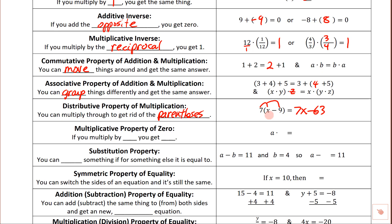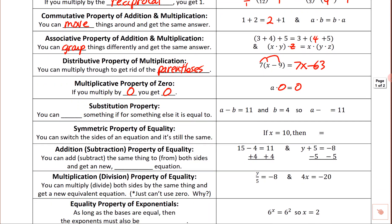Multiplicative property of zero — this is the one everybody loves; you learned this in elementary school. If you multiply by zero, you get zero — doesn't matter how big or small the number is. So a times zero equals zero.